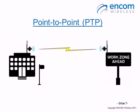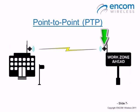The following example illustrates a point-to-point wireless link. At our main building, we have installed our master radio, and it is communicating to our remote radio that is installed at the construction sign.